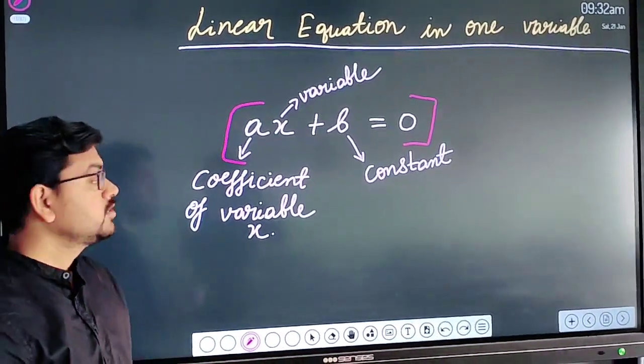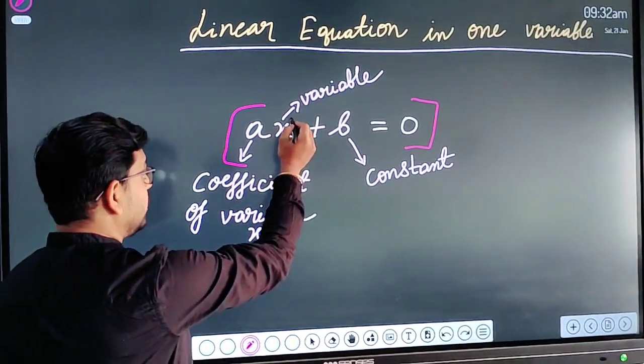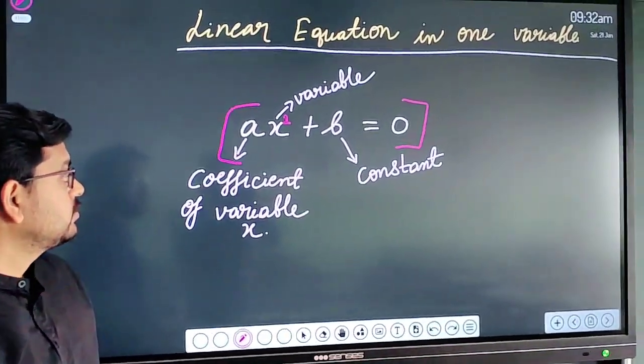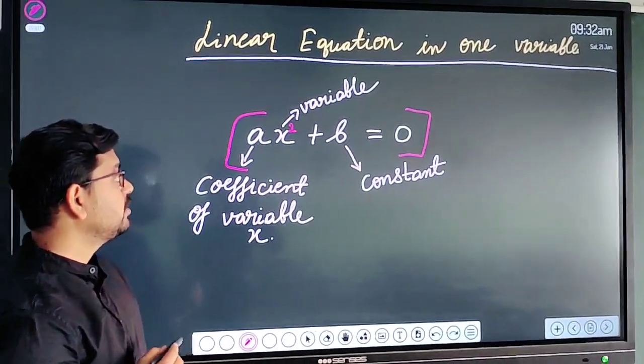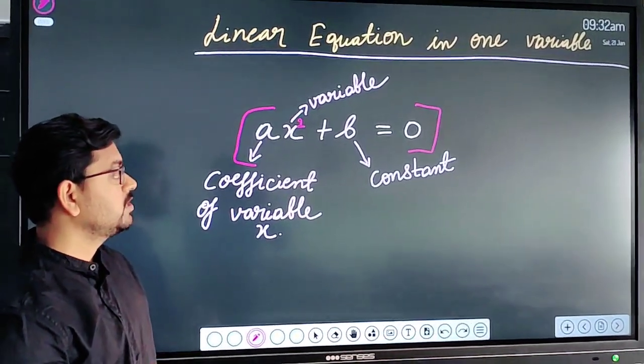Linear means one. So if a variable has power one, and if any variable is written here, it means the power is one. So when a variable has power one, that is known as linear equation in one variable.